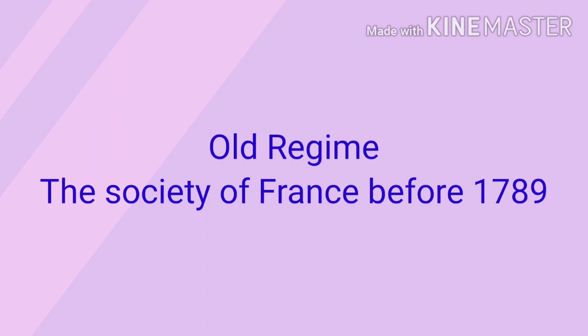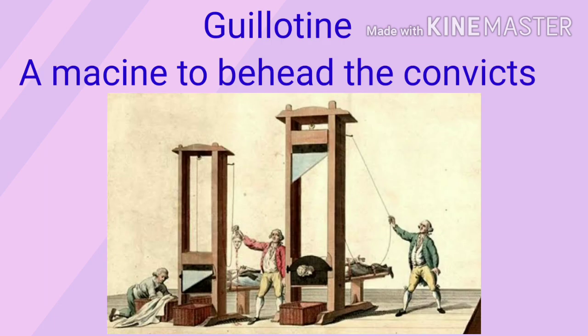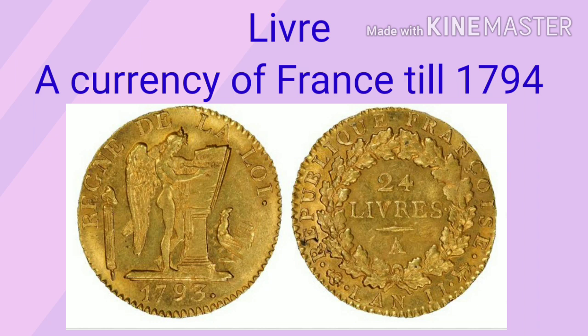Directory: it was a five-member board, or a committee of five executives, which ruled France from 1794 to 1799. Next term is Guillotine: it was a machine used to behead convicts during the Reign of Terror — look at the picture to understand that. Next is Livre: it was a French currency which was discontinued in 1794.